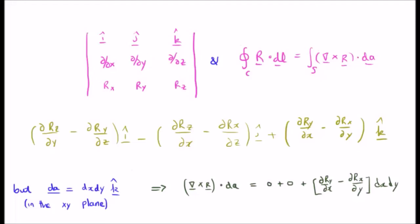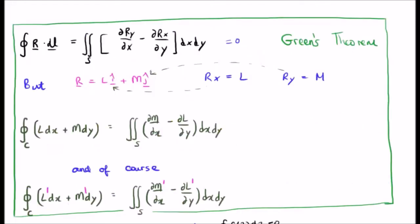This should start to look quite familiar. This means if we have an arbitrary vector field in two dimensions which we call r, we take the closed line integral of that dL, that's equivalent to getting the surface integral or the double integral of del r sub y del x minus del r sub x del y, integrated dx dy. That of course is equal to 0.